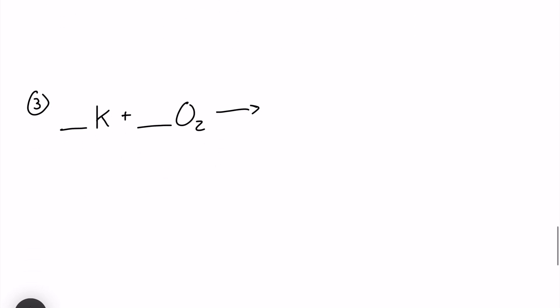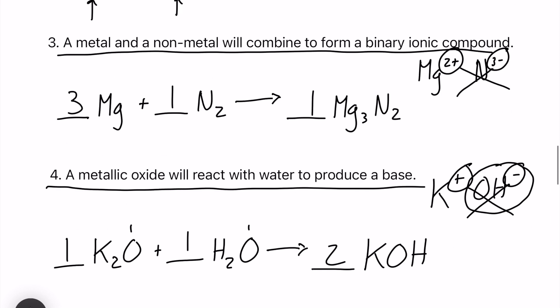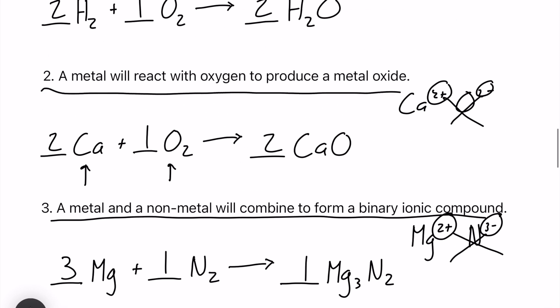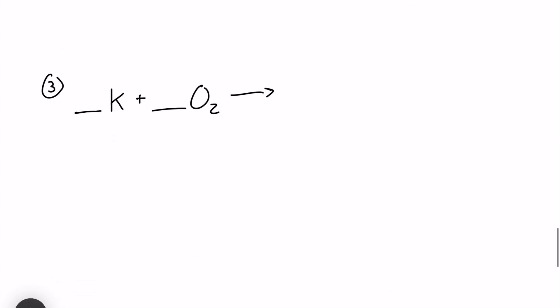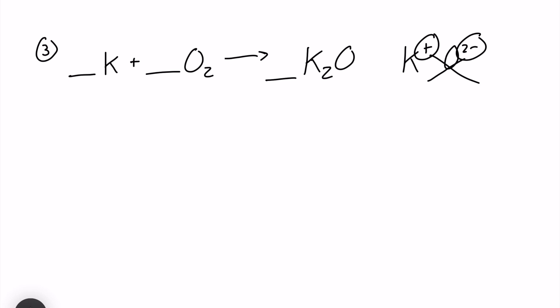Last one. We have potassium and oxygen reacting. Let's find a rule. We have a metal will react with oxygen to produce a metal oxide. Our product here will be a metal oxide. Our cation in this case is potassium. Our anion is O2-. These will swap and drop. Let's neutralize that and we're going to get K2O. Let's balance this. We are going to have 2 here. We have 2 oxygen already on the reactant side and we have 4 potassium on our reactant side.